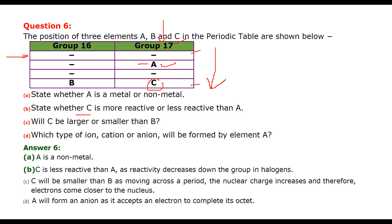Will C be larger or smaller than B? Now C is on the right side, B is on the left side. So when we move across a period, the nuclear charge increases. Therefore, the electron comes closer to the nucleus. So C will be smaller than B as you move around. Which type of ion, cation or anion, will be formed by element A? A will form an anion. It will be anion because it is going to accept electron to complete its octet. So it needs, it will take an electron, make itself stable. So it will complete its octet.